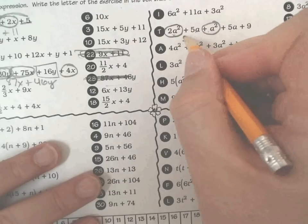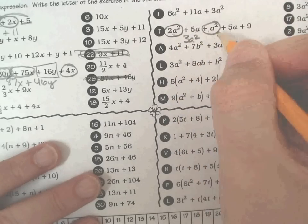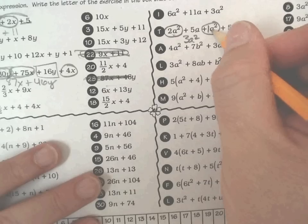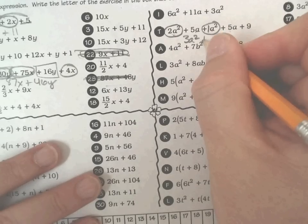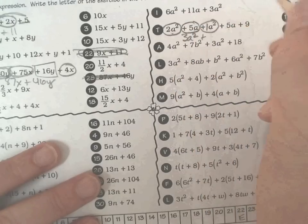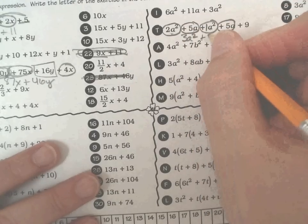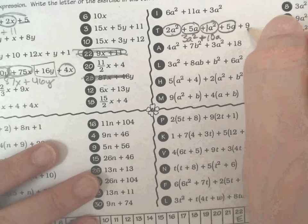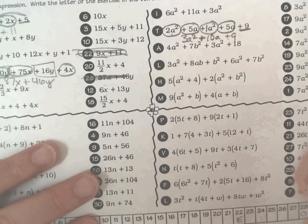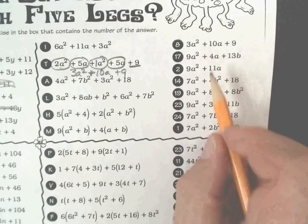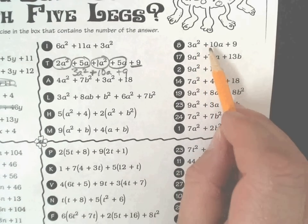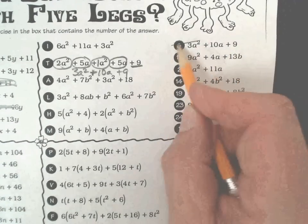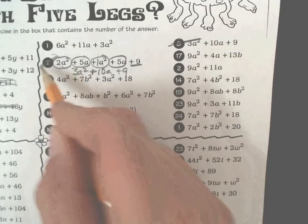So 2a squared plus an a squared, that's 3a squared. We always assume there's a 1 in front if there's no other number attached to a letter. Plus I have a 5a. I have another 5a. So that's 10a's. 5 plus 5 is 10. And then I just have this 9 hanging out. So look over here. Here I have 3a squared plus 10a plus 9. So number 8 will be t.